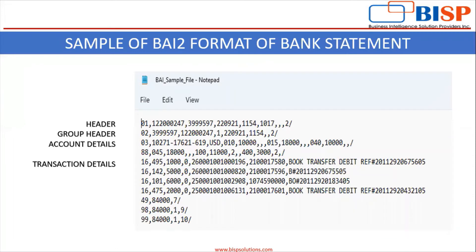You can see the sample file format for the BAI-2 bank statement. In the first line you can see this is the header. Here 01 is for the header. The second digit is for the routing number of the bank branch. The third is the receiver's unique identification number. This is the date of the bank statement, and this is the time the bank statement was generated.